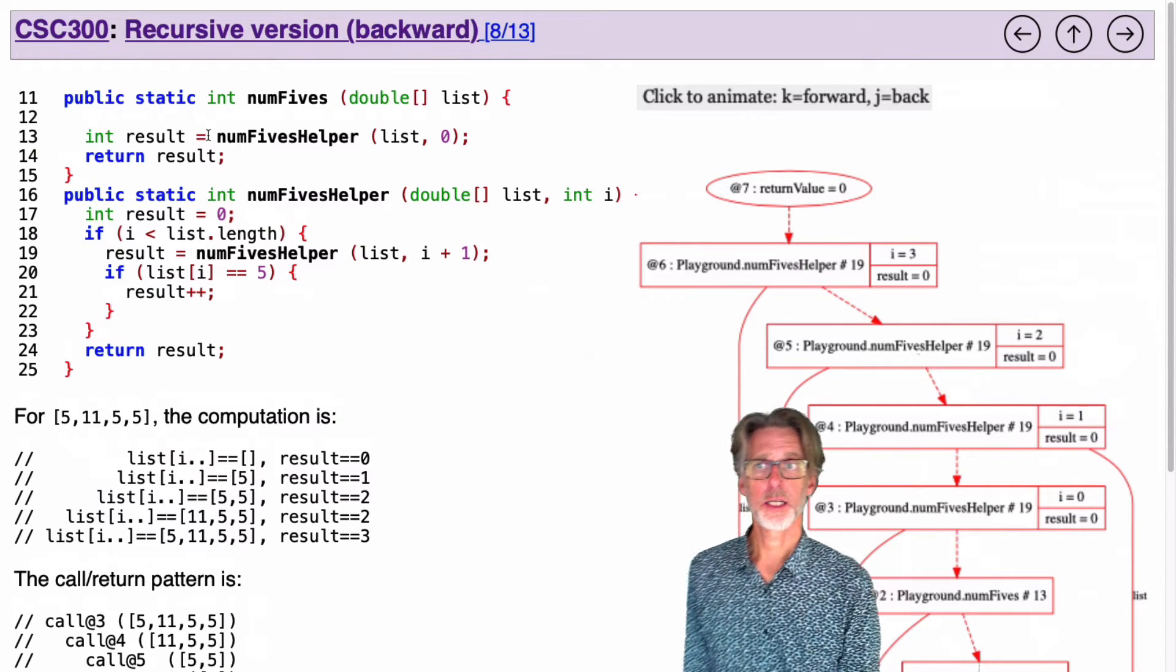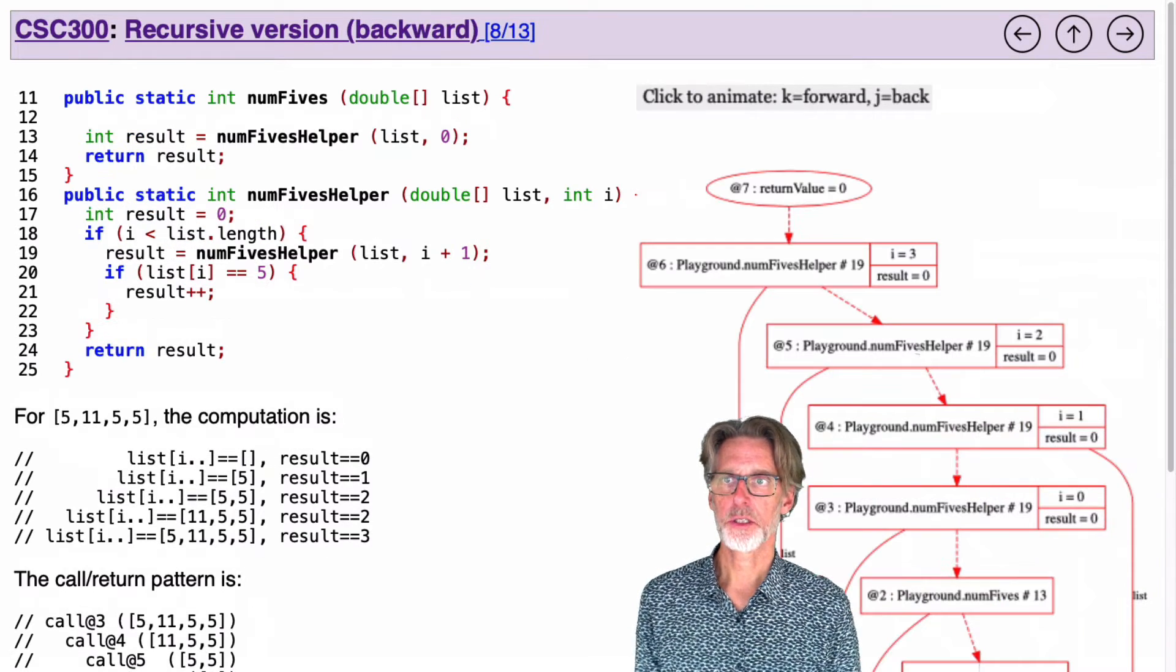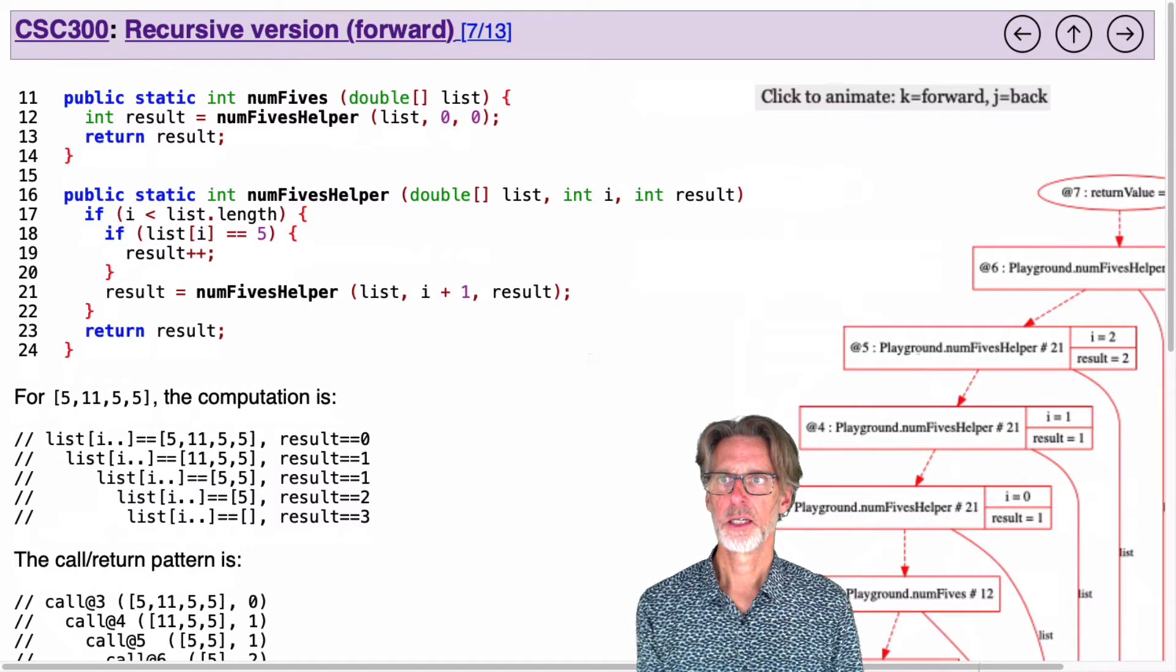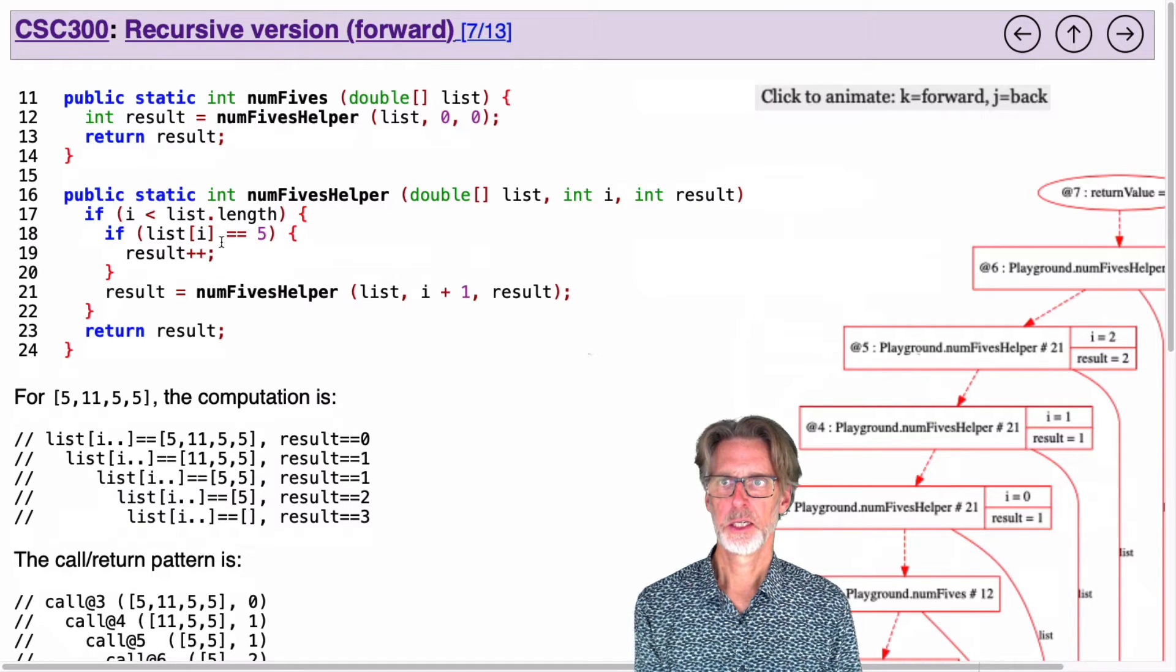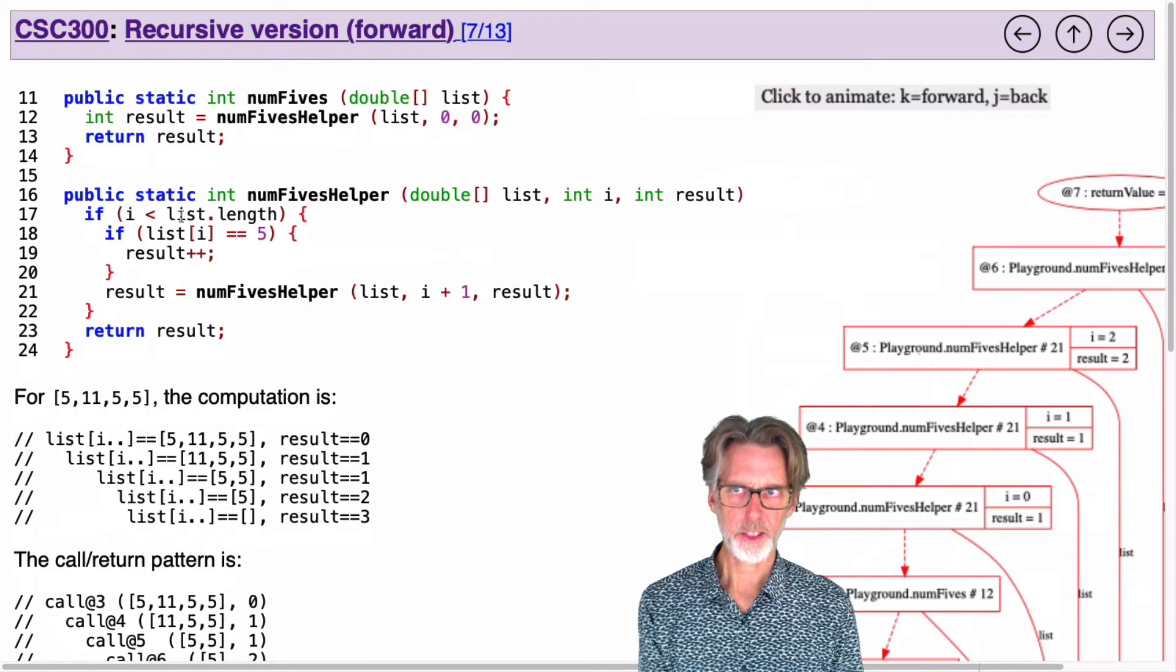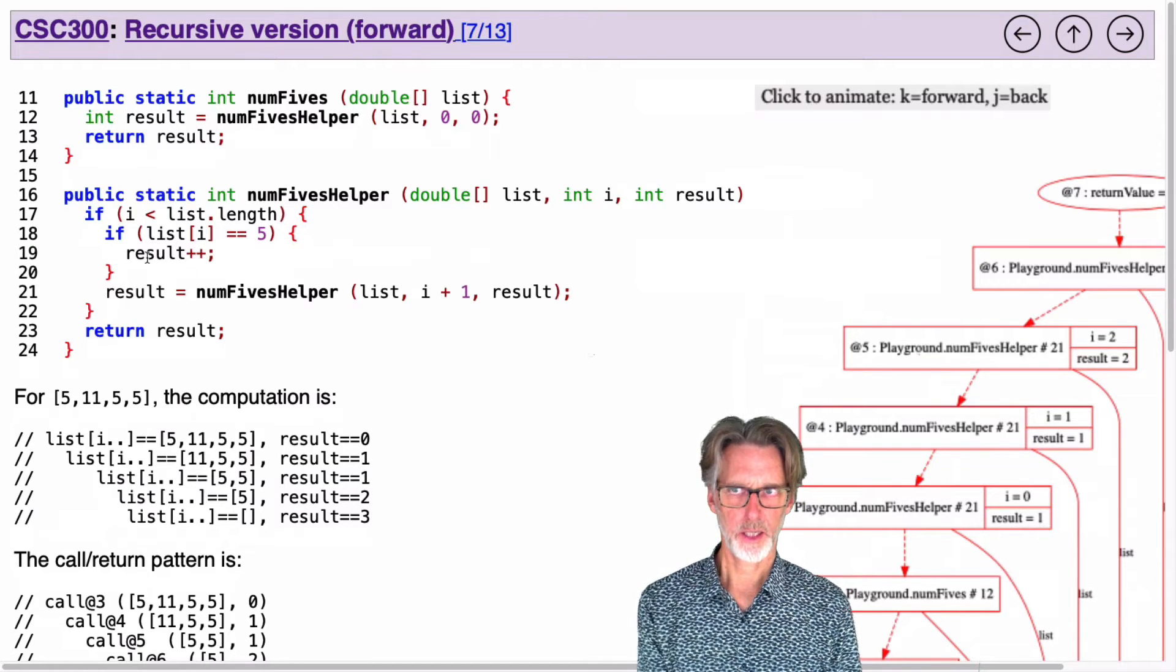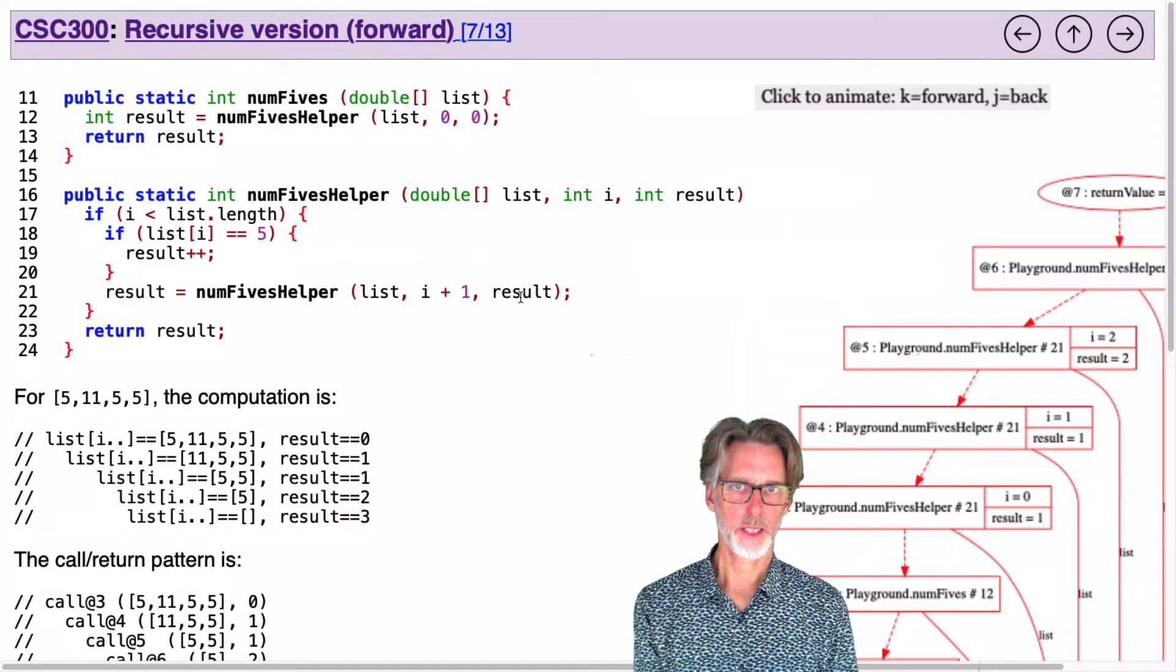So here is the code for this, and it's not that dissimilar. Let's just look back and forth. Here is the forward version. What do I do in the forward version? I'm checking the bound here, obviously, and then I'm updating the result, then doing a recursive call with that updated result.